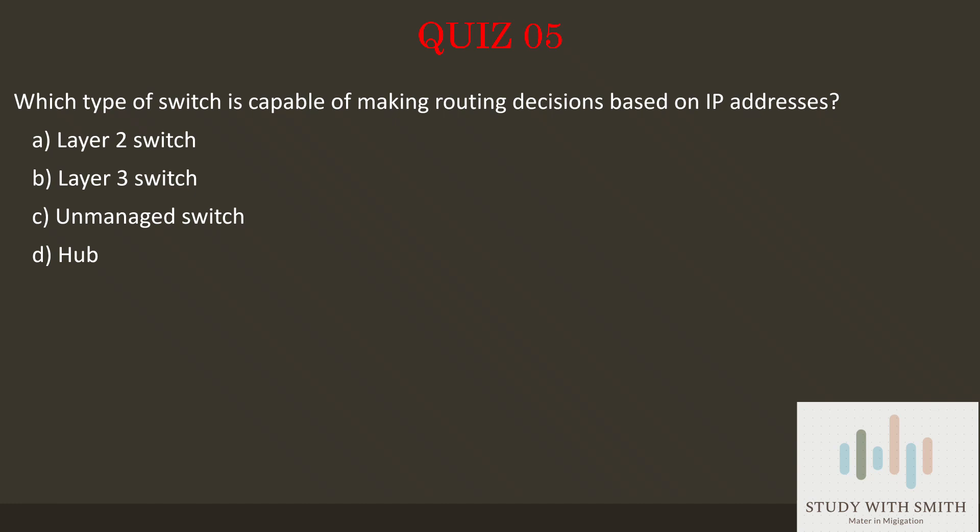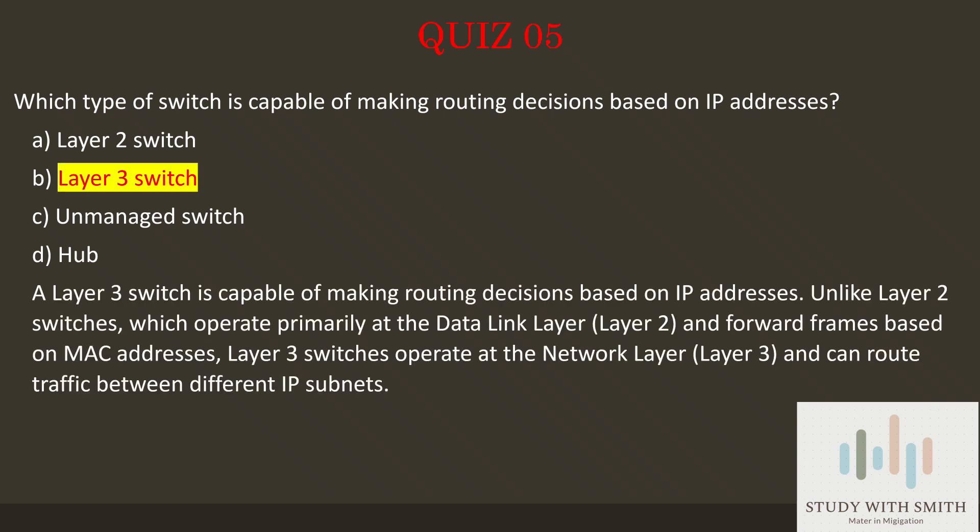The answer is B — Layer 3 switch. A Layer 3 switch is capable of making routing decisions based on IP addresses. Unlike Layer 2 switches, which operate primarily at the data link layer, Layer 2, and forward frames based on MAC addresses, Layer 3 switches operate at the network layer, Layer 3, and can route traffic between different IP subnets.